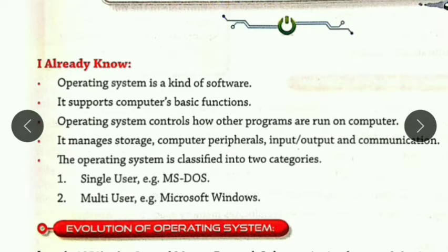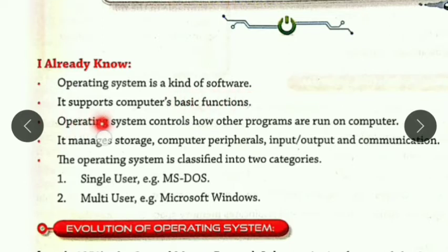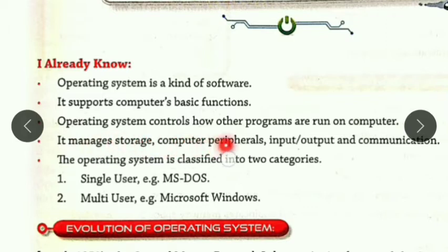So we have already known something about the operating system. Let's list what we already know. What is the operating system? An operating system is a kind of software — it is software which runs other software. It supports the computer's basic functions. The operating system controls how other programs are run on the computer system. It stores data, it operates the peripherals, and input-output commands are all managed by it.